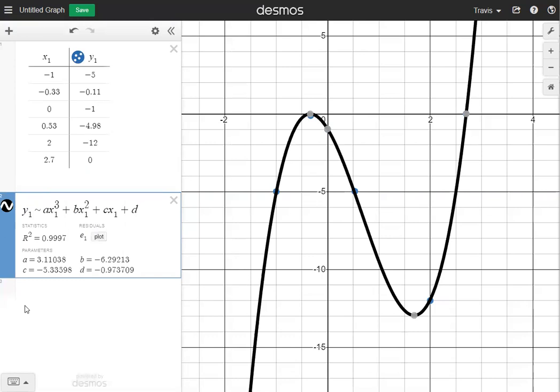Now the r squared value is going to be under statistics. It is 0.9997. That's very close to 1. That makes it a very good approximation.